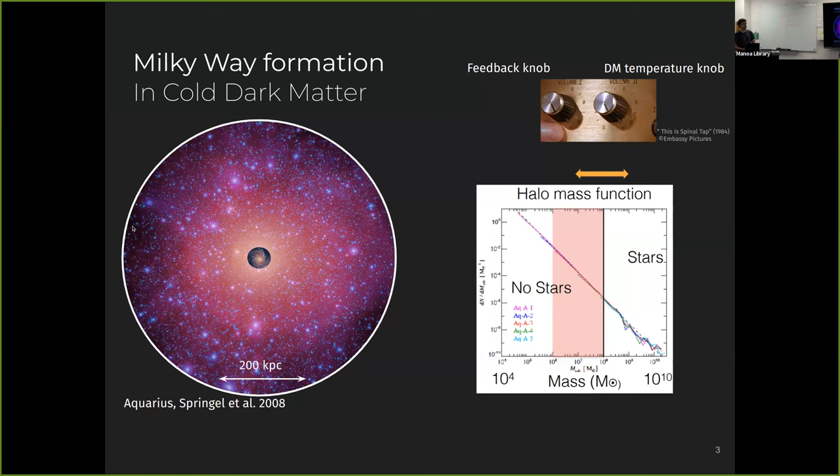And this lack of stars at the subhalos of very low masses have became known as the missing satellite problem, which has been solved by simulators using dark matter simulations that now include baryonic effects that include feedback. So that's where there's the feedback knob there. You can turn that on on your simulation and then you can suppress the formation of stars at certain mass scales of these subhalos.